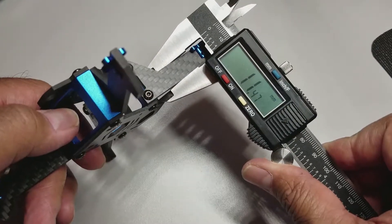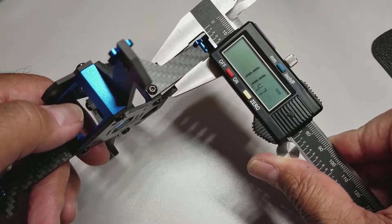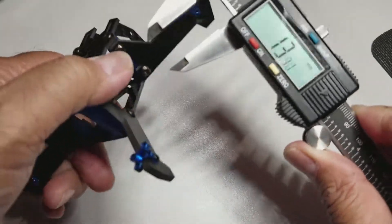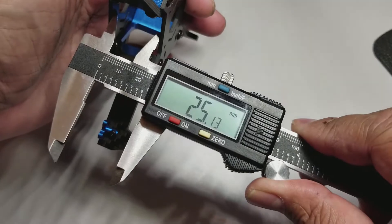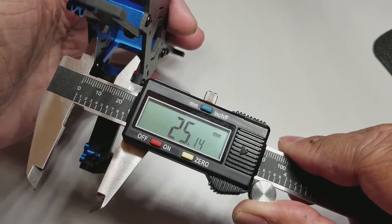And we'll finish out the measurements here. The height of the arms is about 11.5mm. And then the stack height is 25mm. So plenty of room for your stack in there.